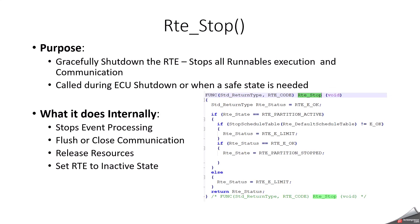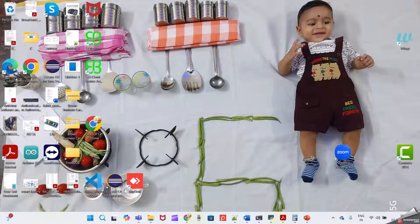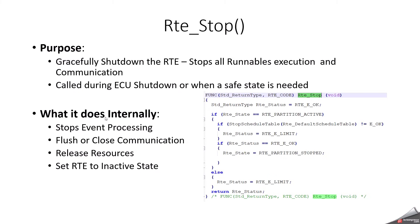RTE stop: what it will do is stop or shut down the RTE, meaning it will stop all runnable execution and communication. This will get called during ECU shutdown or when a safe state is needed. Internally, it stops event processing — preventing any new runnable activations — releases resources, frees memory buffers and communication handles, closes communication, ensures pending signals or messages are handled, and finally sets RTE to an inactive state.